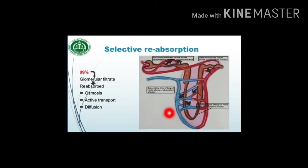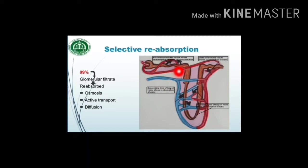Reabsorption occurs through the processes of osmosis, active transport, and diffusion. Some water and most of the glucose are reabsorbed in the proximal convoluted tubule. Salts are reabsorbed by active transport and water follows by osmosis.